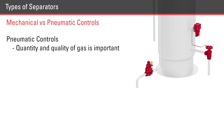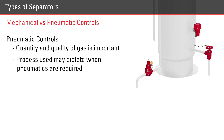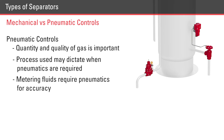The quantity and quality of gas is important when choosing pneumatic controls. The process may also dictate when pneumatics are required. For example, metering fluids usually requires pneumatic controls to maintain a level of accuracy because they can be opened and closed quickly.